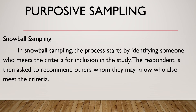Snowball sampling, also known as referral sampling. For example, if your respondents are those who suffered from COVID-19 and you only know one person, you ask that person if they know someone else who also suffered from COVID-19. You then ask those referred respondents, and repeat the process of asking for referrals until you obtain the desired number of samples.